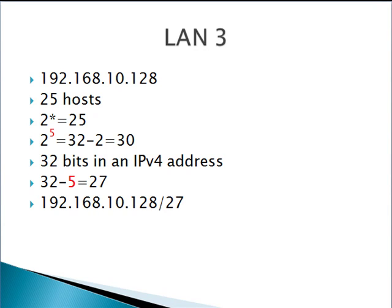For LAN 3, we're starting with 192.168.10.128 and we need 25 hosts. 2 to the 5th will give us 32, and 32 bits minus 5 is 27, so the CIDR notation is 192.168.10.128/27.